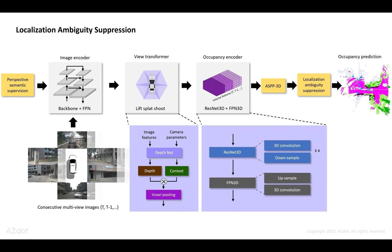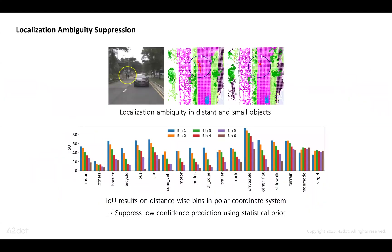In addition, we propose localization ambiguity suppression to refine occupancy prediction. Unlike LiDAR systems, the presence of objects can be predetermined by detected returns from 3D sensors.